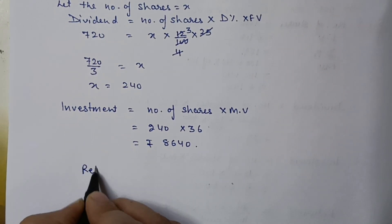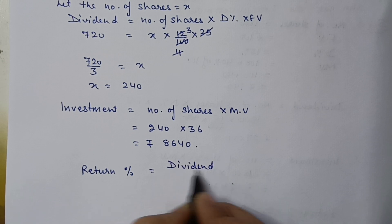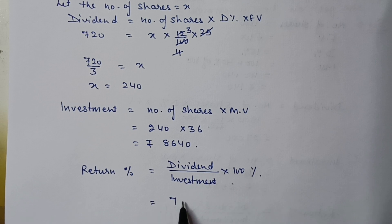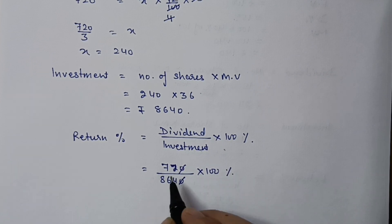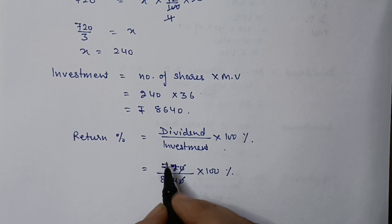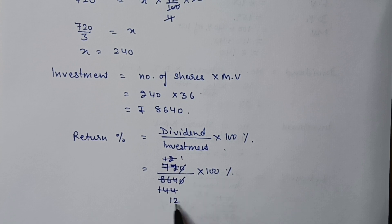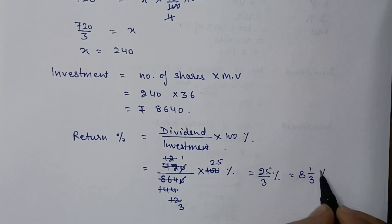Now we calculate the return percentage. Return percentage equals dividend divided by investment multiplied by 100%. Dividend is 720 rupees and investment is 8,640 rupees. After cancelling zeros and common factors, we get 25 by 3 percent, which as a mixed fraction is 8 whole 1 by 3 percent.